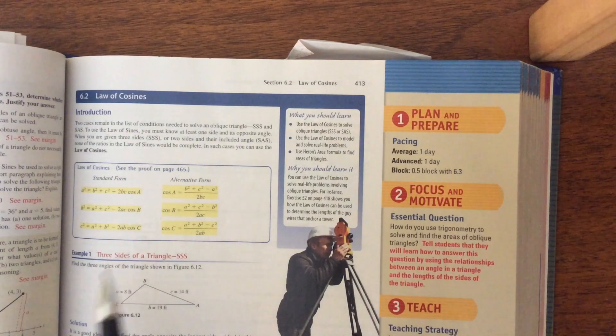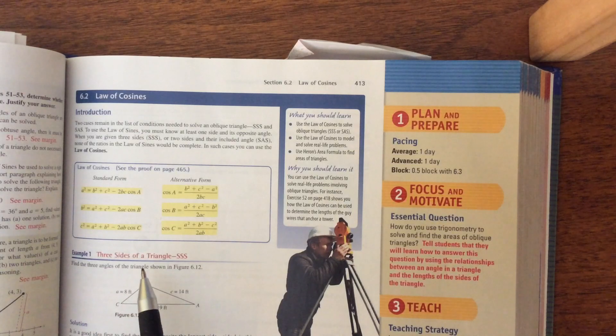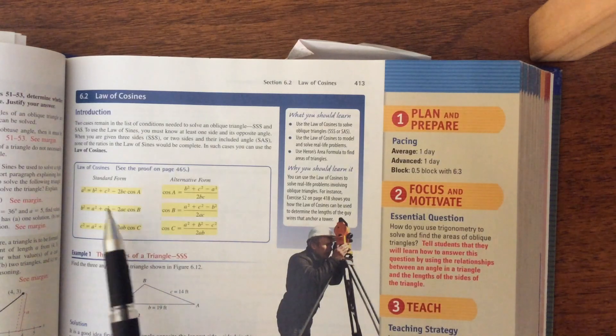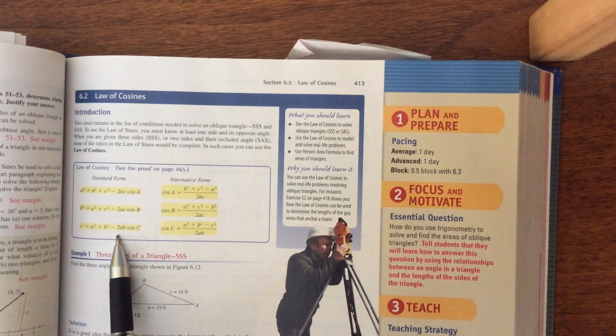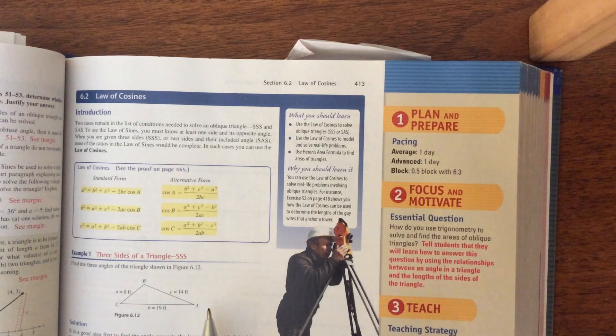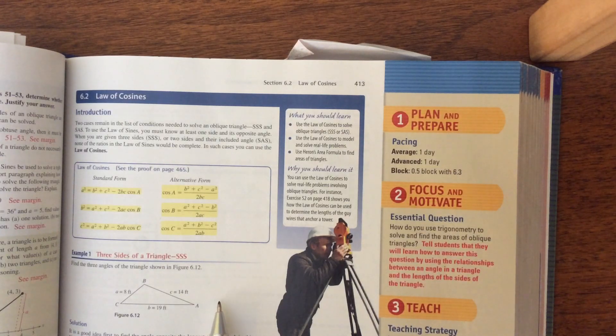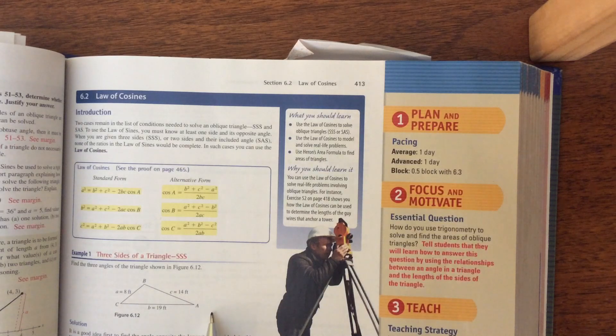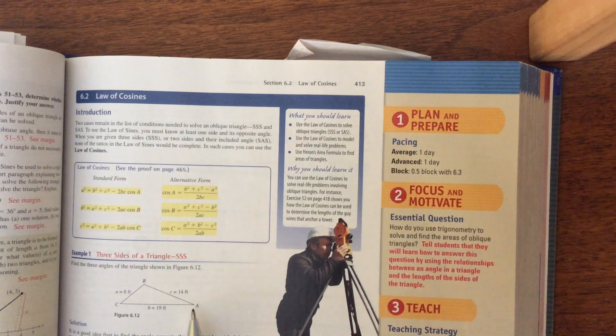So we have different formulas depending on what information you're looking for. So if you're looking for a side length, it's easier to use this one. And we can use the alternative form if we are solving for an angle measure. So let's first look at if we have all three sides. So we have none of the angles, so we can't use law of sines. So we'll use law of cosines.